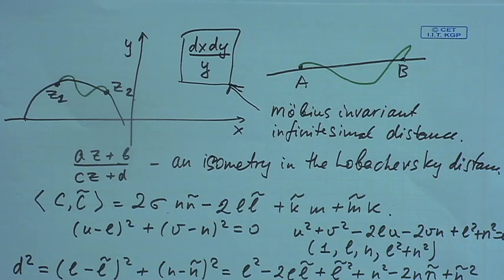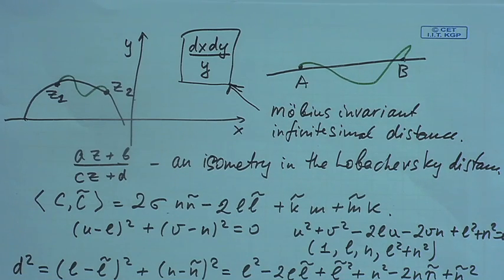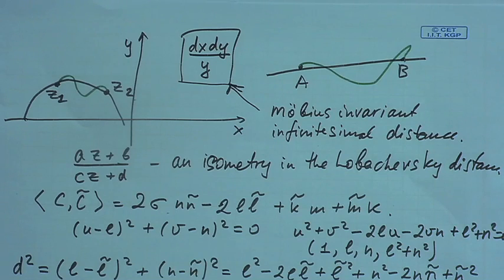Think, for example, about the sphere. If you put two points on the sphere and look for the shortest curve, what appears to be the geodesics on the sphere are sections of the largest-diameter circles (great circles), which provide the shortest curve. That is the kind of straight line on the sphere.